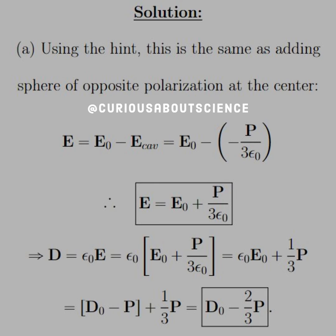Now recall that we were given E naught in terms of D naught and P originally in the question. So we had to solve for epsilon naught E naught, which equals D naught minus P, which is the term you see in the bracket there. So we have minus P plus a third P, add them together, and we get negative two-thirds P. Therefore, our electric displacement with the cavity is D naught minus two-thirds P.